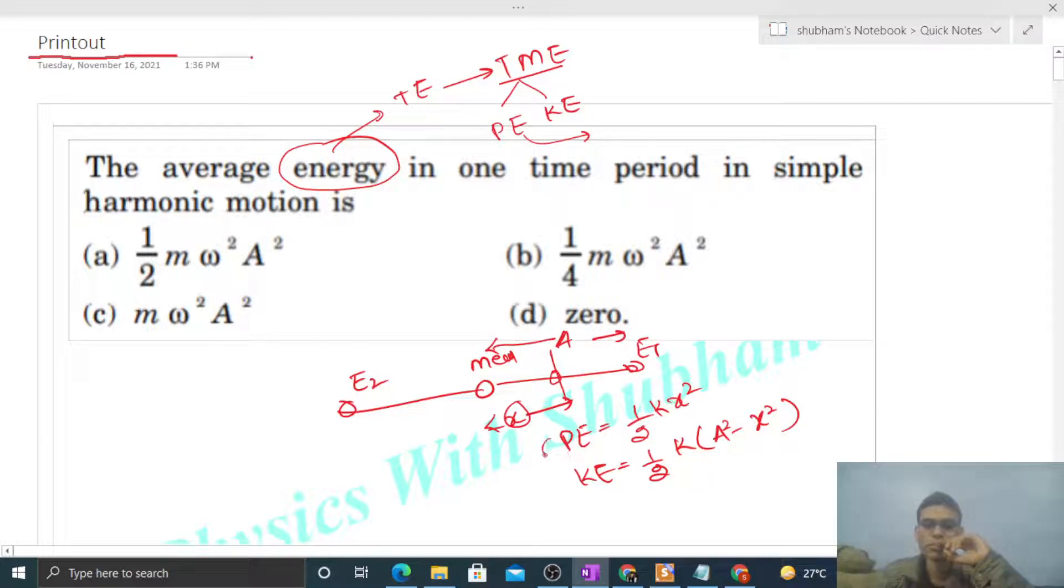Now total mechanical energy at this point - that will be sum of potential energy and kinetic energy, that is simply half of k into a square. So you see the total energy is independent of x.